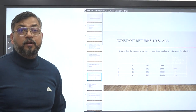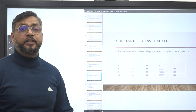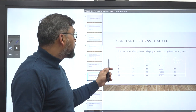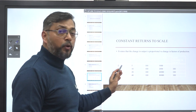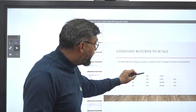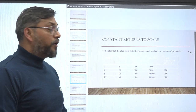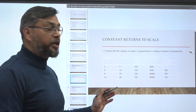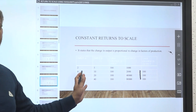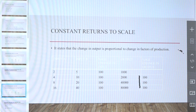Now let's look at constant returns to scale. Constant returns to scale states that the change in output is proportional to the change in input factors of production. Looking at the table, the percentage change in input is constant at 100%, and the resultant change in output is also constant at 100%. Constant returns to scale means the change in output will be proportionate to the change in inputs.